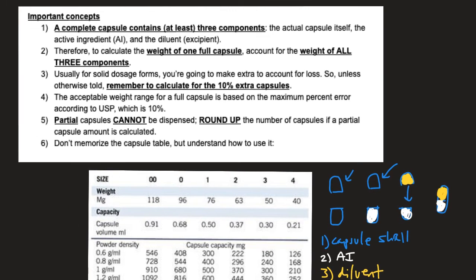Concept number three: for solid dosage forms, you're going to account for extra loss. Unless otherwise told, remember to calculate for 10% extra capsules, just in case you lose some powder or some capsules, or make some capsules incorrectly — especially since solid dosage forms are usually harder and more meticulous to compound. So account for the 10% extra capsules, which I'll go over in the example.